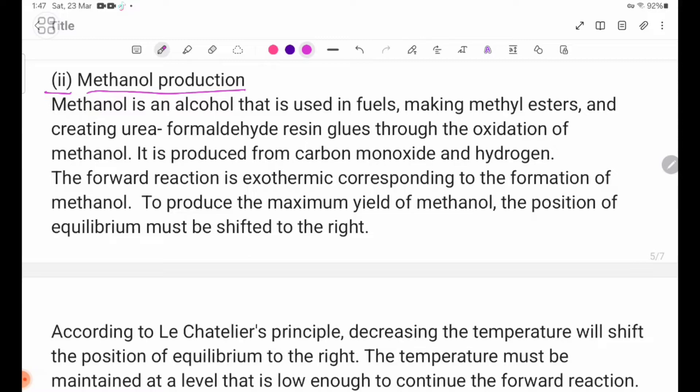Methanol production. Methanol is an alcohol that is used in fuels, making methyl esters and creating urea formaldehyde resin glues through the oxidation of methanol. It is produced from carbon monoxide and hydrogen.